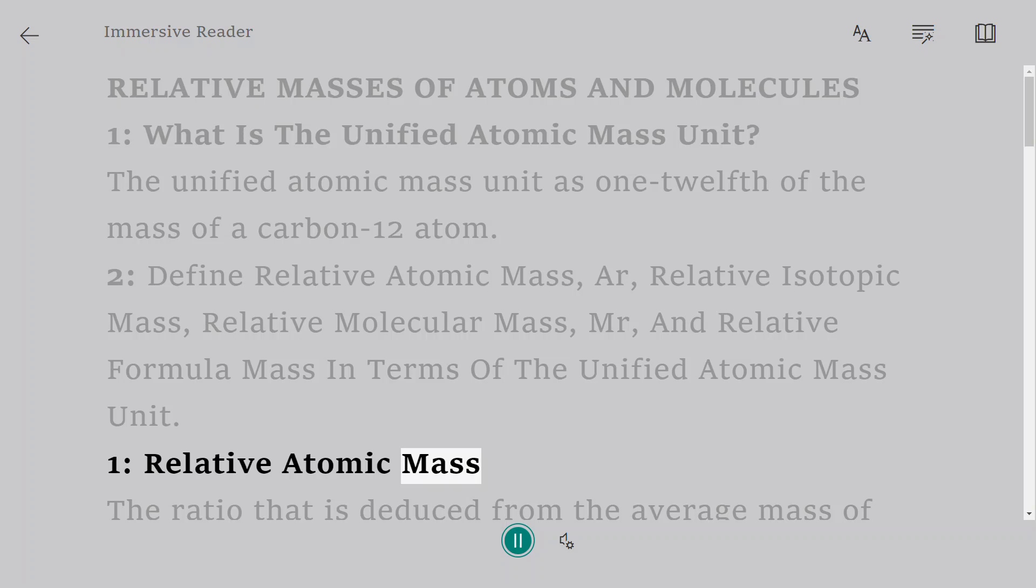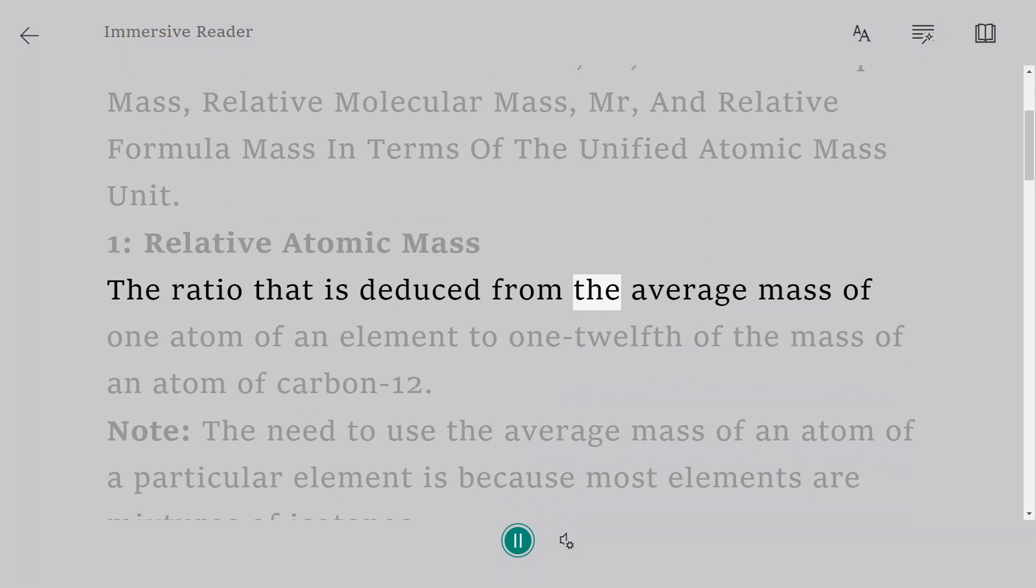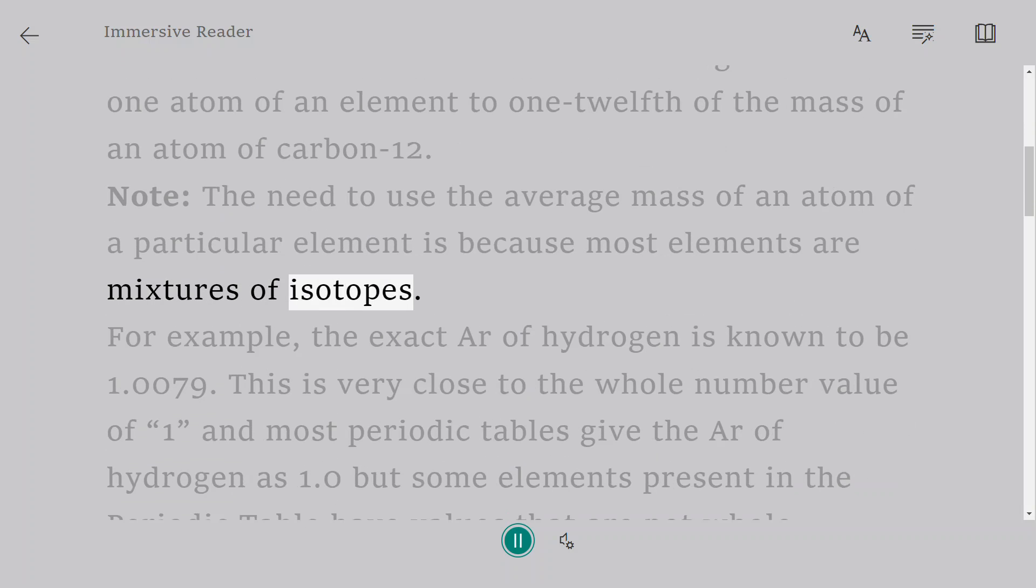Relative Atomic Mass: The ratio that is deduced from the average mass of one atom of an element to one-twelfth of the mass of an atom of carbon-12. Note, the need to use the average mass of an atom of a particular element is because most elements are mixtures of isotopes.